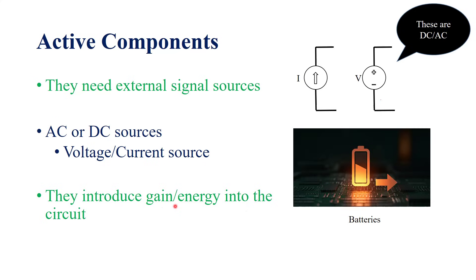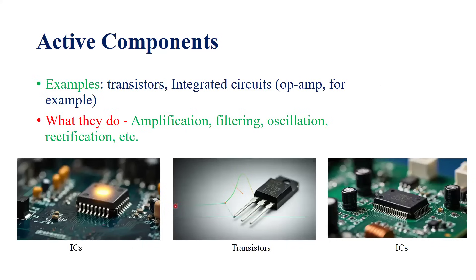In other words, active components control the gain or energy into the circuit, and that's why we refer to them as active components or devices. Examples of active components are transistors and integrated circuits — ICs in short. There are a range of integrated circuits, for example op-amp (operational amplifier), filter, attenuator, oscillator — all these ICs are available on the market. Simple standalone devices such as transistors are also referred to as active components.